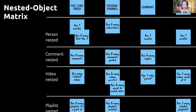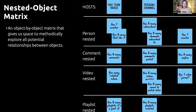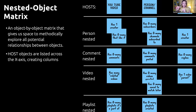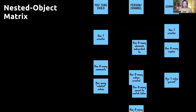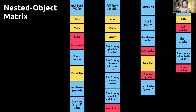All you have to do is read it as a sentence. 'A comment has one creator. A comment has zero-to-many replies. A playlist has one creator. A playlist has one-to-many videos inside of it.' Read it like a sentence. The Nested Object Matrix is an object-by-object matrix — it gives us space to methodically explore all potential relationships between objects. The host objects are listed across the X-axis, and the exact same objects are listed down the Y-axis, creating rows. This creates the foundation for our object map.